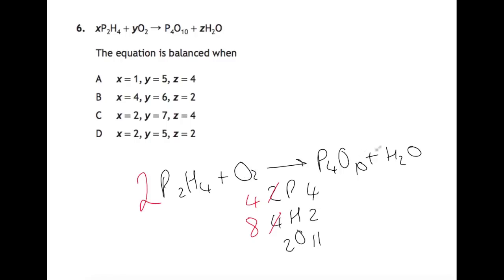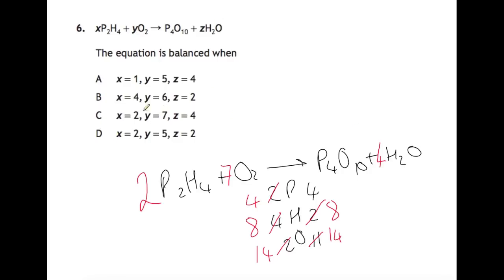We've got 8 hydrogens on the left but 2 on the right, so if we put a 4 in front of the water, we now have 8 hydrogens. We've now got 14 oxygens on this side but only 2 over here, so if we put a 7 in front of the oxygen, we now have 14. Looking at what we've put in: x equals 2, so it can only be C or D. We have y equals 7 and z equals 4.